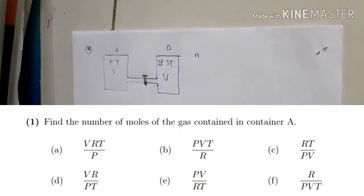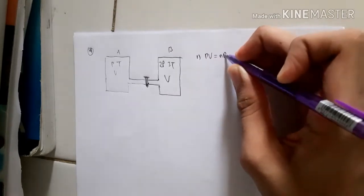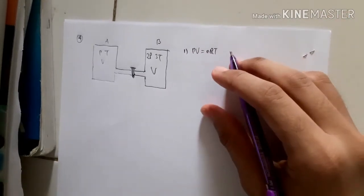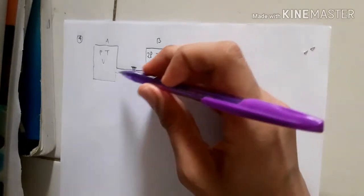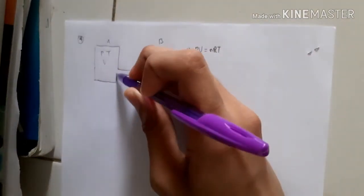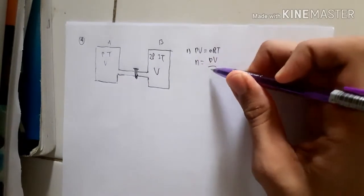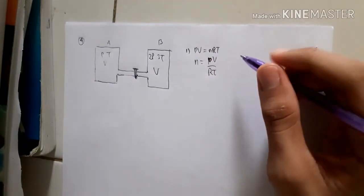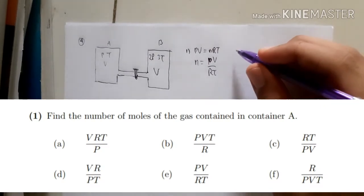For number one, we find the number of moles of gas in container A using the ideal gas equation. We get n = PV/RT, so the answer is PV/RT, which is option E.